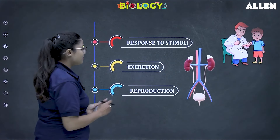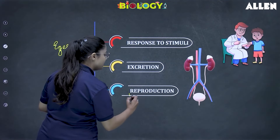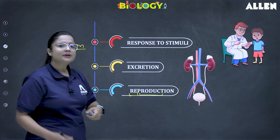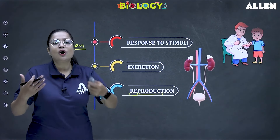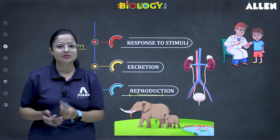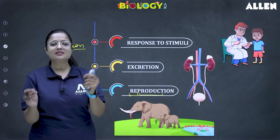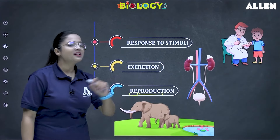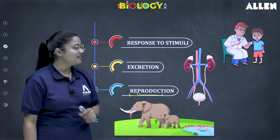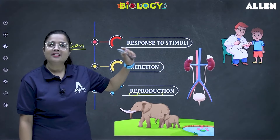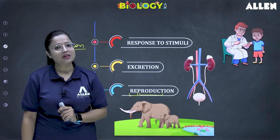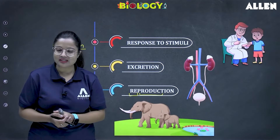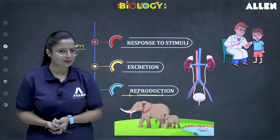Moving to reproduction — 're' means again and 'production' means to produce. So to produce more of your own kind, to produce young ones, this is known as reproduction. So yes, living organisms reproduce, also perform excretion, respond to stimuli, grow, show movement, and need food.